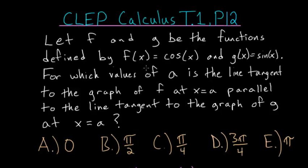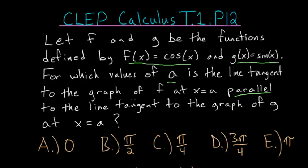Let f and g be the functions defined by f of x equals cosine of x, and g of x equals sine of x. For which values of a is the line tangent to the graph of f at x equals a parallel to the line tangent to the graph of g at x equals a? Since we're dealing with tangent lines, we need to find the derivatives of each function, since evaluating the derivative at specific points gives us the slope of the tangent line.